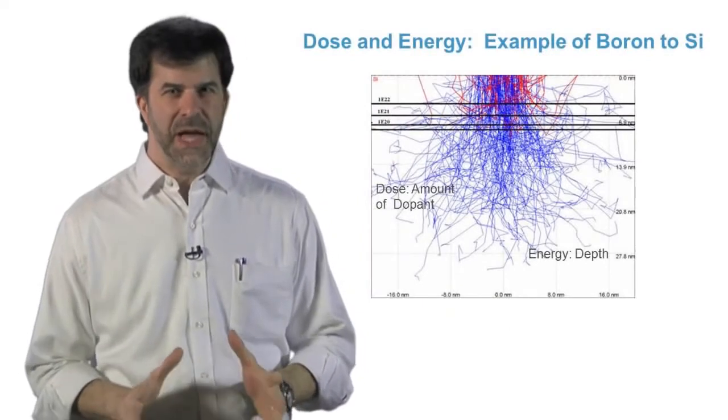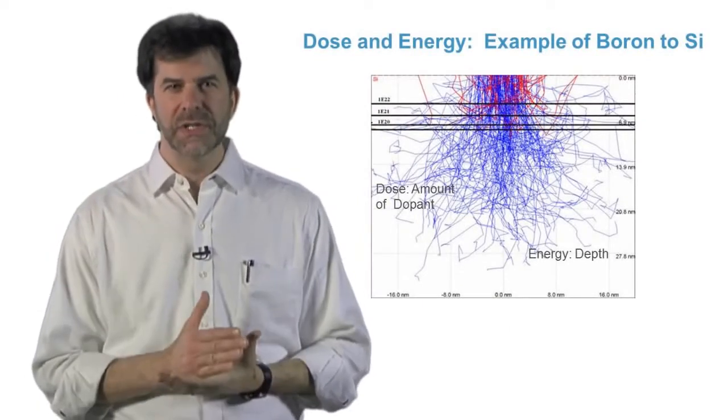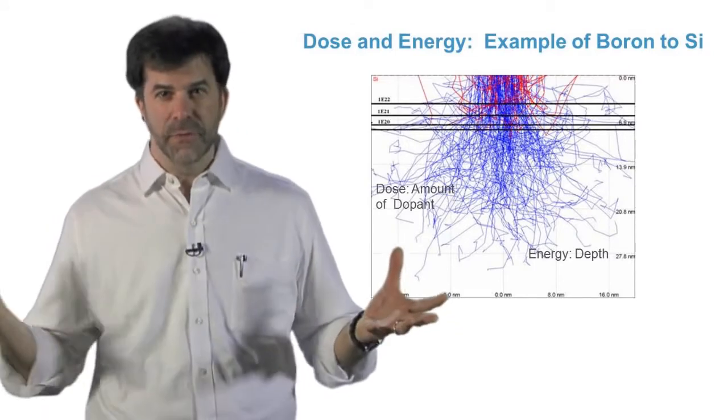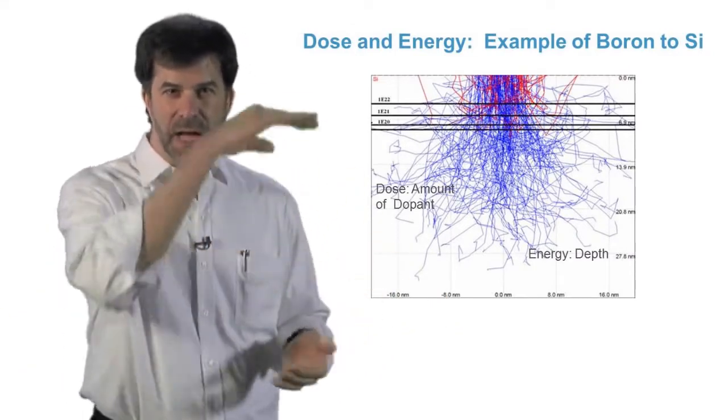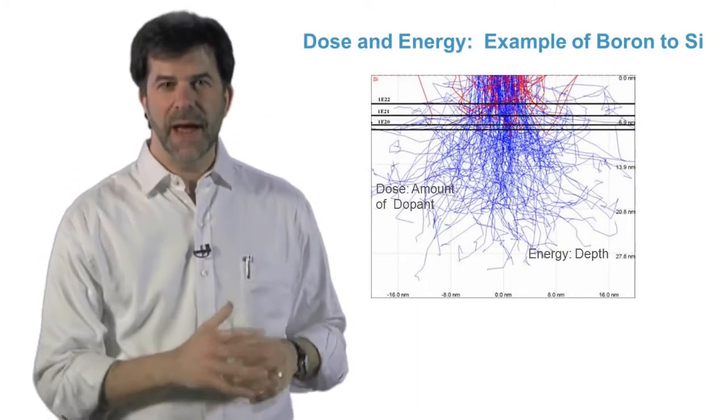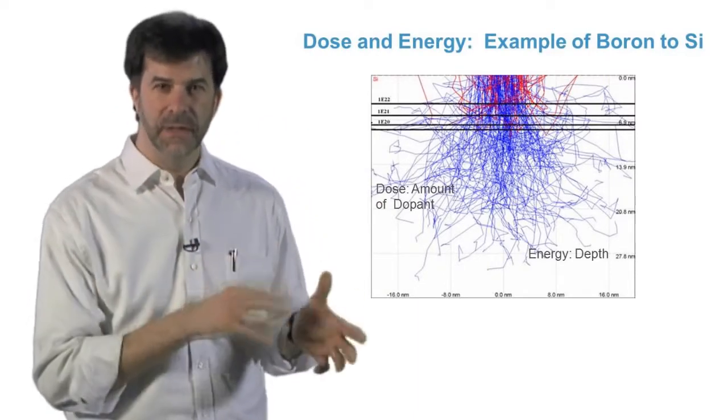In general, we can segment chip fabrication processes into two bins, back end of the line and front end of the line. Back end of the line processes add films on the surface of the wafer and use photolithography to pattern and etch to define the layer.